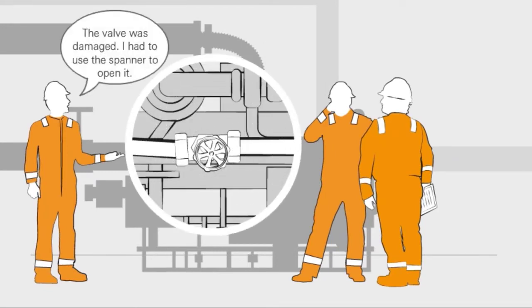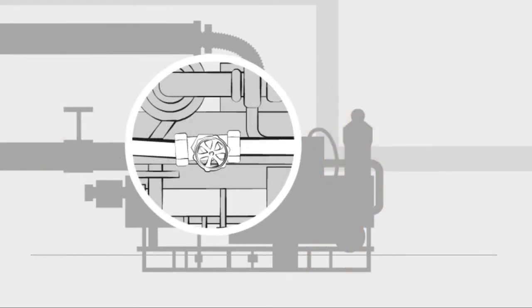Understanding why these mistakes happen can help us to prevent them. Our understanding of incident causation is fundamental to our ability to learn from accidents.